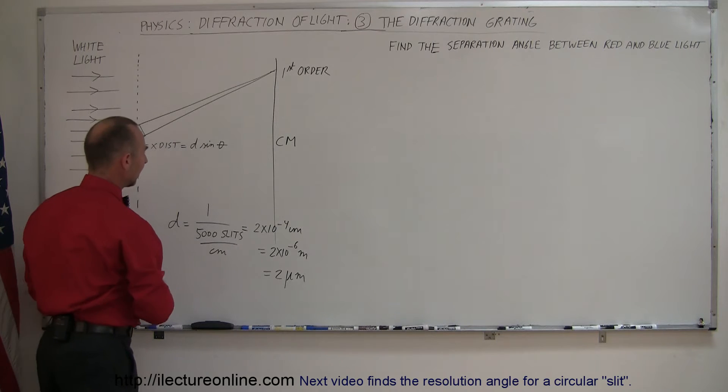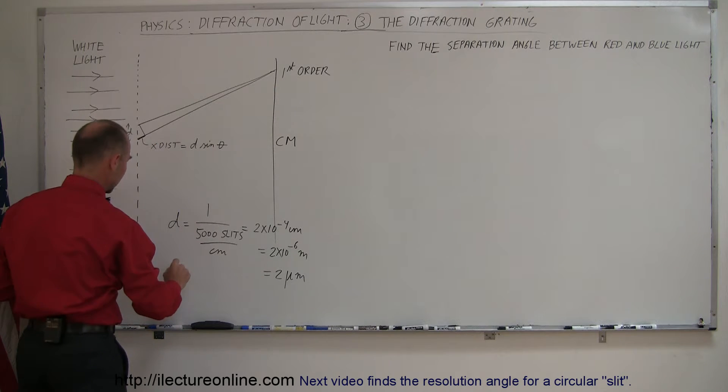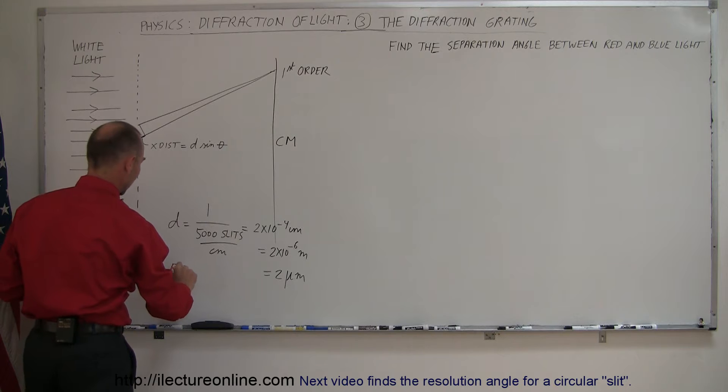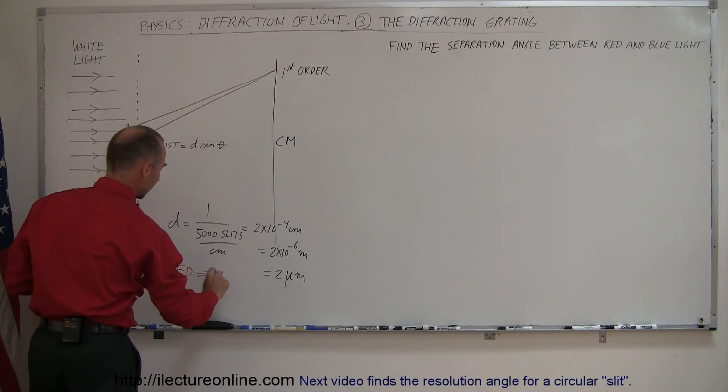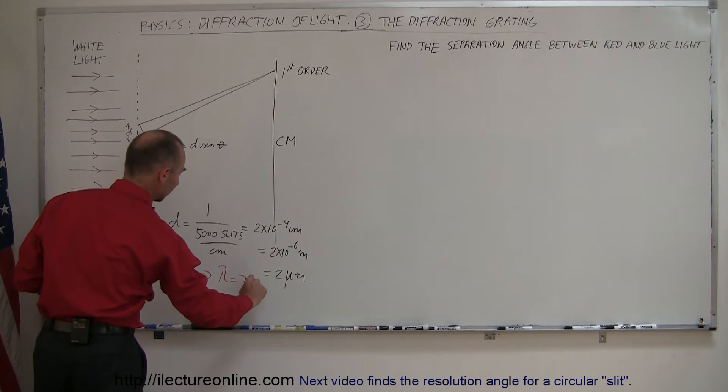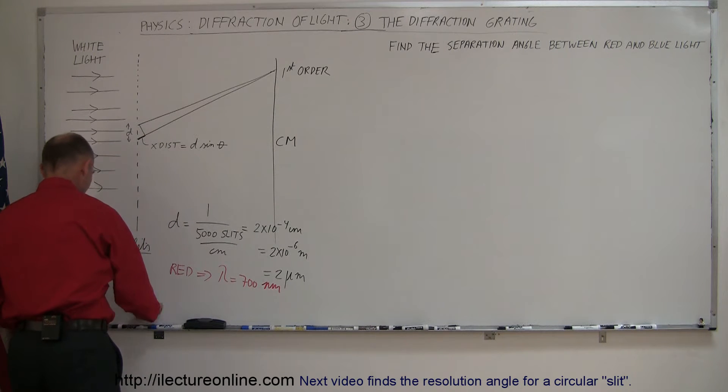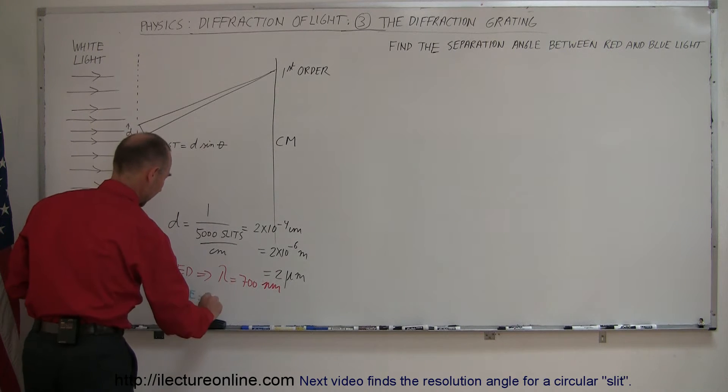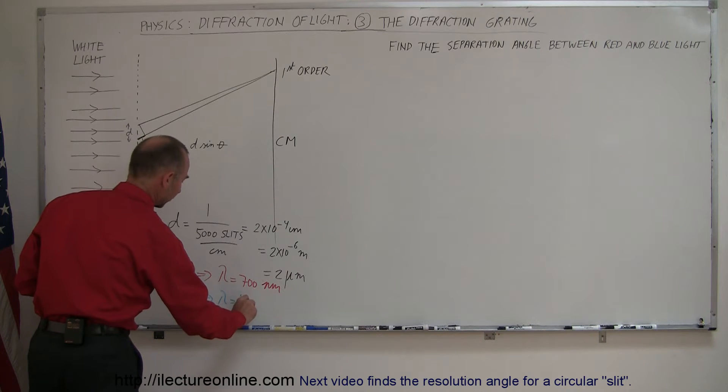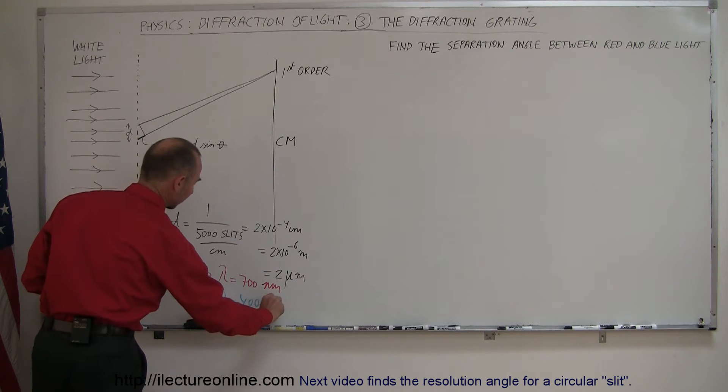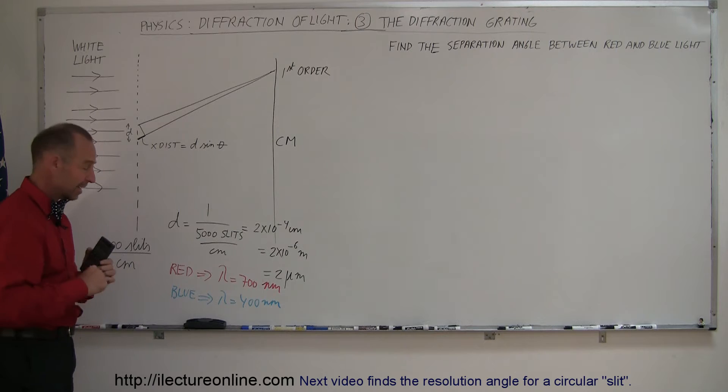And of course, the red light has a wavelength. Red has a wavelength equal to about 700 nanometers. And of course, the blue light has a wavelength equal to about 400 nanometers. That's of course approximate, but it gives us the idea.